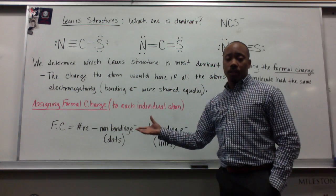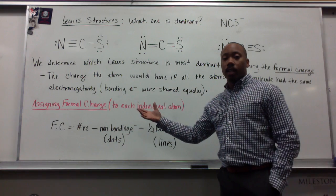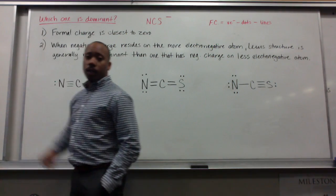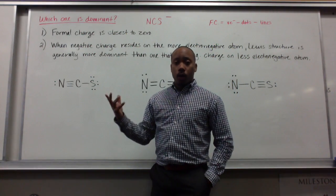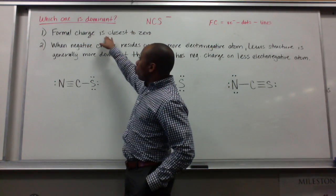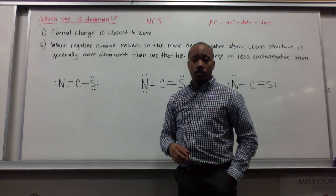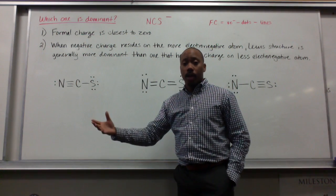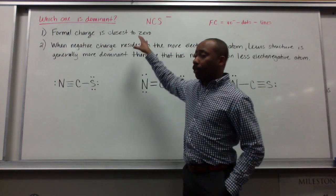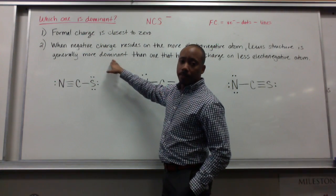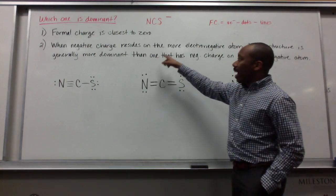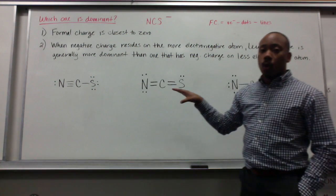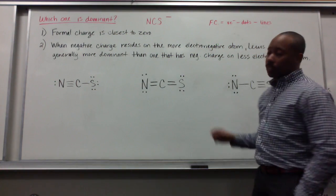Once we've assigned formal charges, we can decide which structure is dominant. The Lewis structure that has formal charges closest to zero is more dominant. If that doesn't give you a clear picture, you go to the second criterion: when negative charge resides on the more electronegative atom, the Lewis structure is generally more dominant than the one that has negative charge on the less electronegative atom.